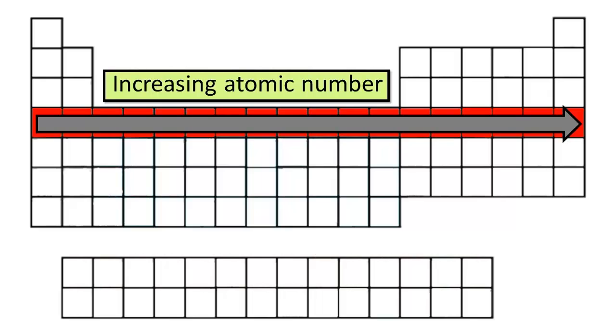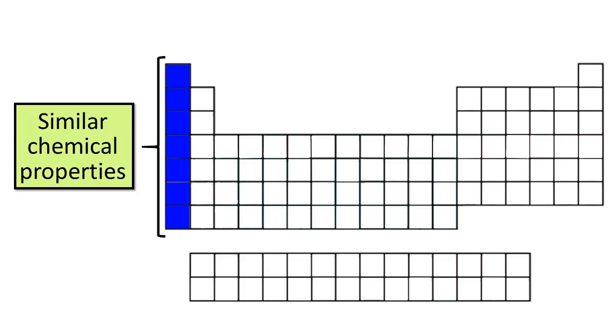Today we'll be talking about why the periodic table has the funky looking shape that it has. By now you probably know that the elements are arranged such that atomic number increases from left to right across a period or row, and that rows are stacked so that elements with similar chemical properties appear in the same group, family, or vertical column. What you may not know is why these chemical properties reappear in this periodic fashion when we arrange elements in order of increasing atomic number.